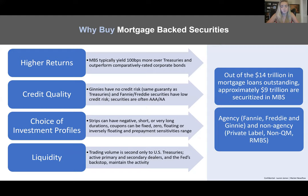About $9 trillion of the $14 trillion in mortgage loans outstanding are securitized in mortgage-backed securities — about 65% of mortgage loans. This includes both the agency side, which are Fannie, Freddie, and Ginnie, and non-agencies, which are the private label, non-qualified mortgage, and RMBS — pretty much synonymous terms for our usage today.